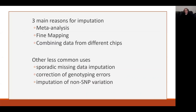There are three main reasons why we might impute our data. The first is meta-analysis, or combining our data with that of another cohort. Secondly, fine mapping, and I'll give an example of that in just a moment. And thirdly, to combine data from different chips.